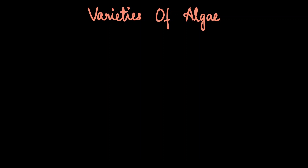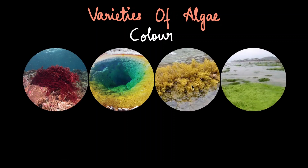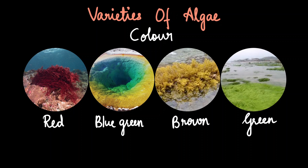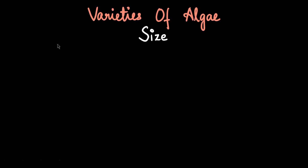We know that algaes developed millions of years ago, so they've had the time to develop and evolve a lot of varieties. These varieties can be seen in various aspects of this organism. To start with, color is something very obviously different. We basically see four types: red, blue, green, and brown. Blue-green algaes are considered as part of the green algae, and mostly when we talk about algae categories, we have three: red, brown, and green.